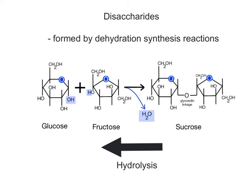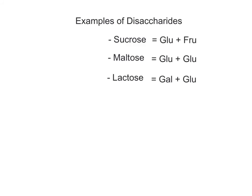Disaccharides can also be broken down into their monosaccharides during digestion through hydrolysis reactions with the addition of water. In addition to sucrose, made from glucose and fructose, other common disaccharides include maltose, which is made from two glucose monomers, and lactose, or milk sugar, which is made from galactose and glucose.